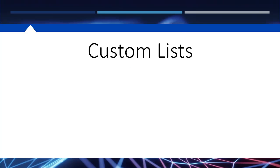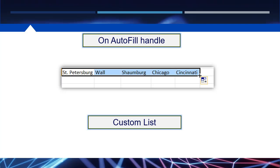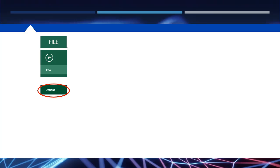But what if you want it to increase based on your own custom list? For example, you want to put in one of the cities where your company is, and have it show all the cities where your company is. It will do that.